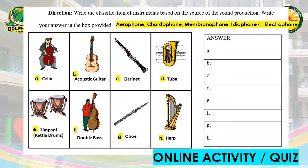For our next online activity or quiz, write your answer on your module or on your paper. You are going to write the classification of instruments based on the source of sound production. Write your answer in the box provided on your module or extra paper. The choices are: Aerophone, Chordophone, Membranophone, Idiophone, or Electrophone.